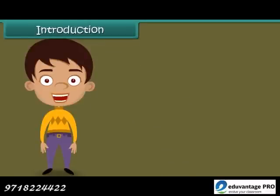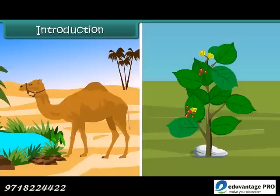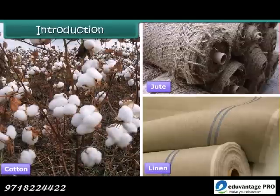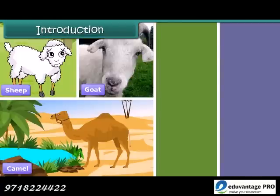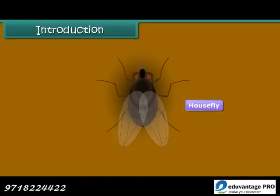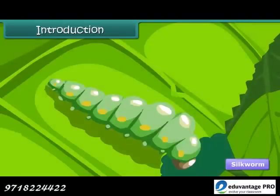Fibers can be obtained from both plants and animals. Some familiar plant sources of fiber are cotton, jute, and linen. Some well-known animal sources of fiber are sheep, goat, camel, alpaca, and llama. If we treat insects as different from animals, then the silkworm can be classified as an insect source of fiber. In this lesson, we learn about an animal fiber — namely wool — in detail.